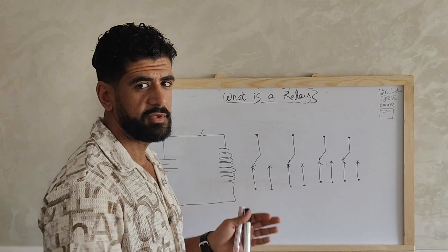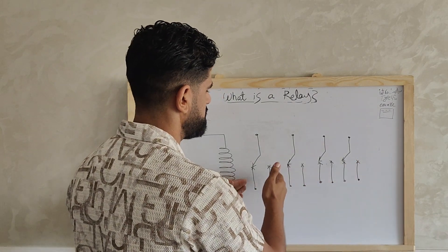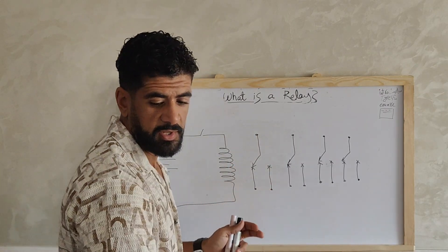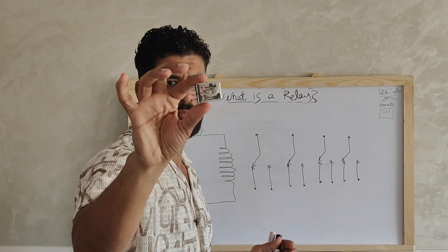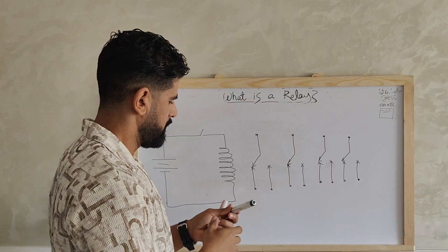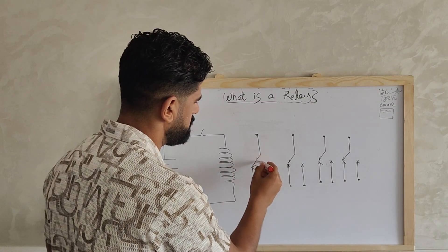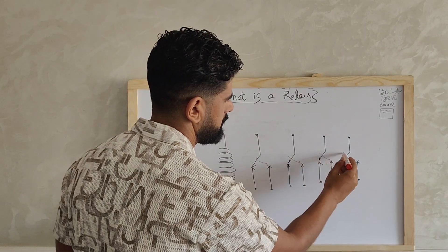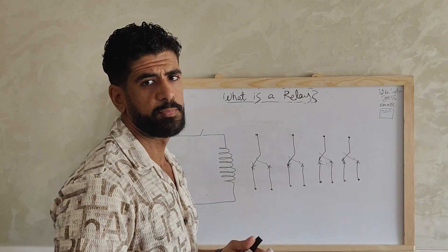Here is an electrical relay with four separate contacts. Every contact has a single pole double throw switch — this is just like our example relay. When this coil is energized, those switches will all move to the other contact.